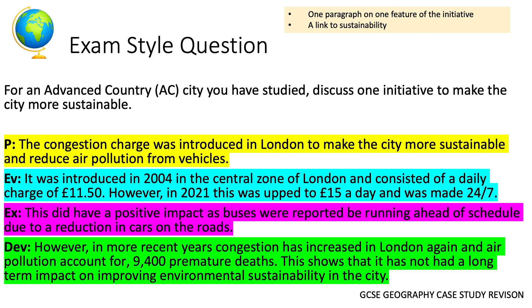For the second paragraph, write about the ULEZ — what it is, when it was introduced, and how it might be positive for environmental sustainability through reducing congestion. The development point should consider economic sustainability: the poorest in society will be hit hardest by this fee, raising the question of whether it is the fairest way to control congestion in London. If you have any further questions, please drop the geography team an email.